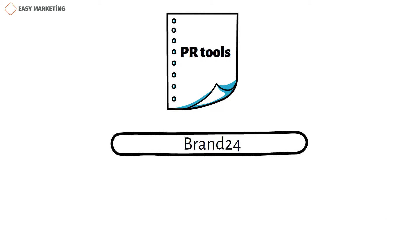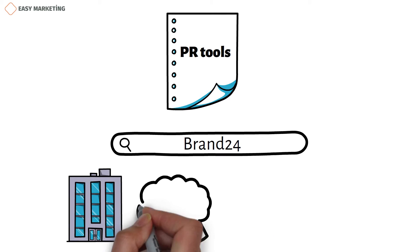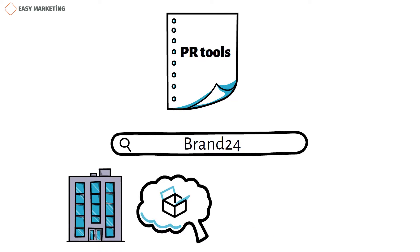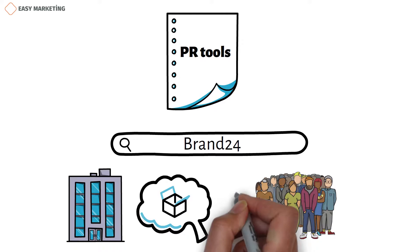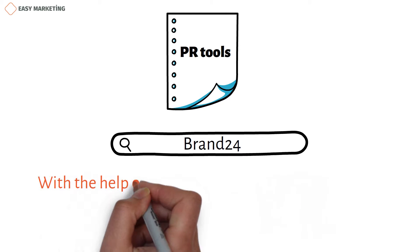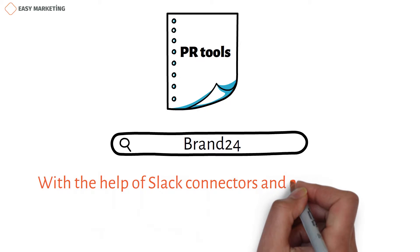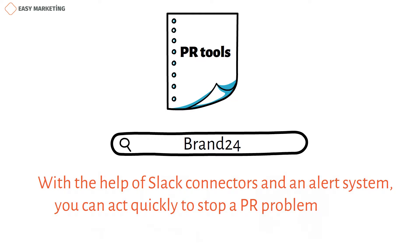Brand24. Monitoring online mentions of your company, product, or service with Brand24 makes it easier to evaluate the impact of your public relations efforts. With the help of Slack connectors and an alert system, you can act quickly to stop a PR problem.